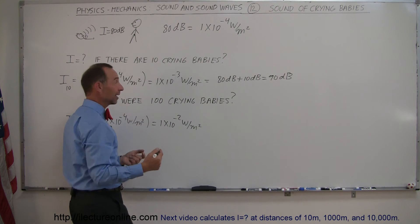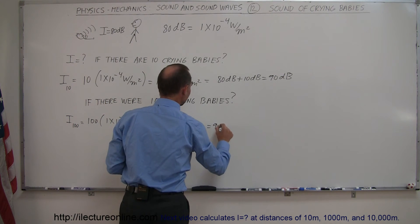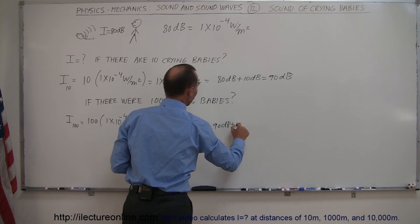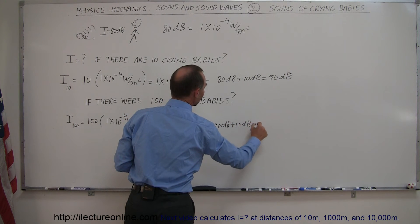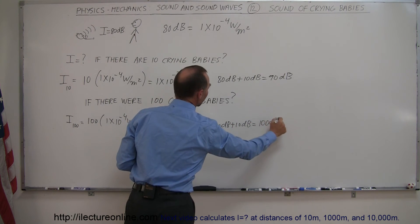That's 10 times as big as before, which means we add another 10 decibels. So this would be 90 decibels plus 10 decibels. Now we can see that would be 100 decibels.